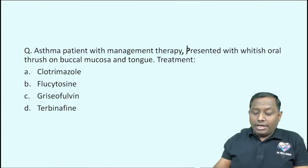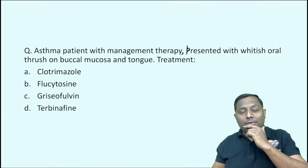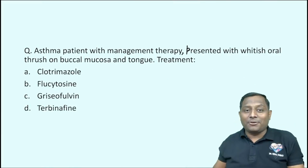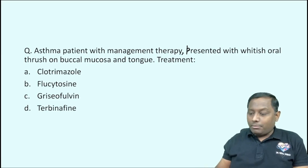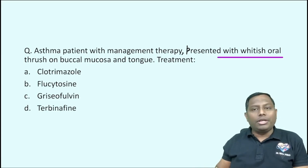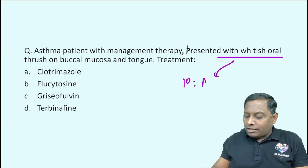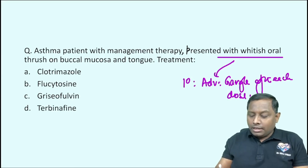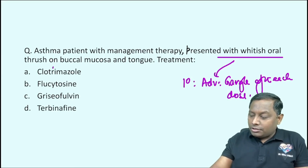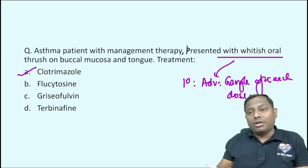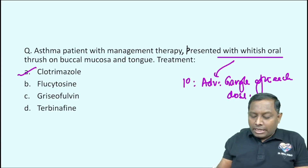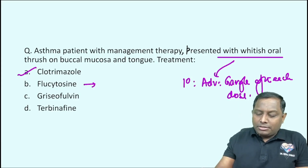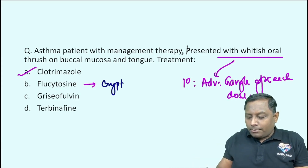An asthma patient on management therapy presented with whitish oral thrush. In NeetPG 2023, an asthma patient on management therapy for bronchial asthma presenting with oral thrush — we already know oral thrush is a side effect of steroid inhalers. To prevent this we advise gargling after each dose. Among the given choices, the answer is clotrimazole.